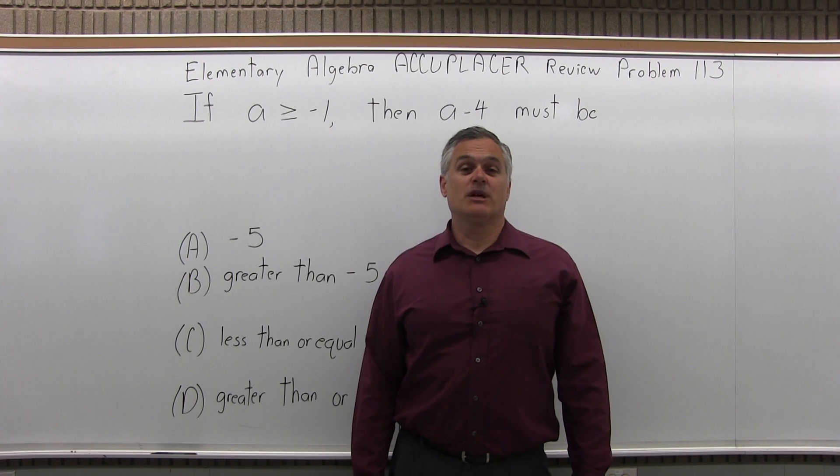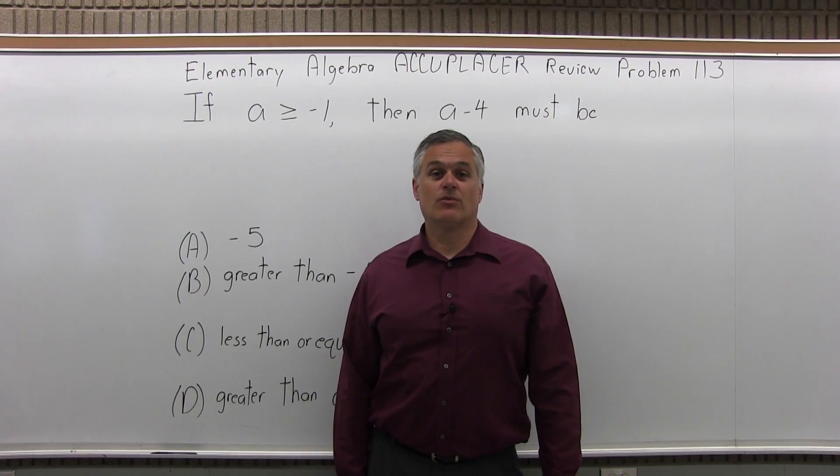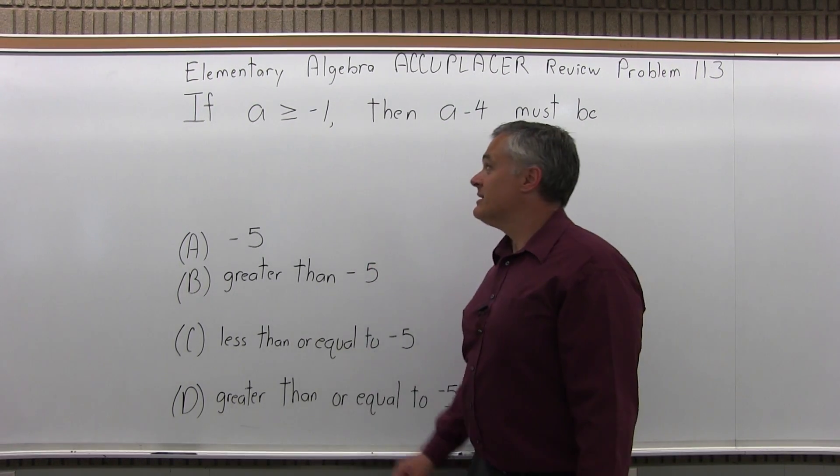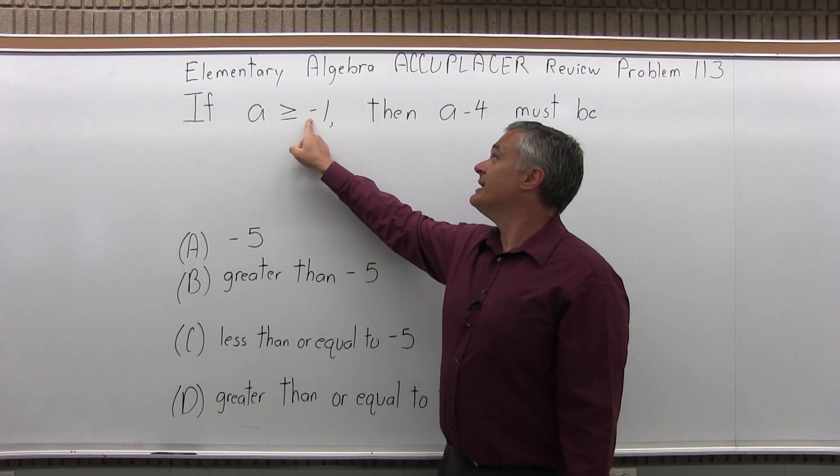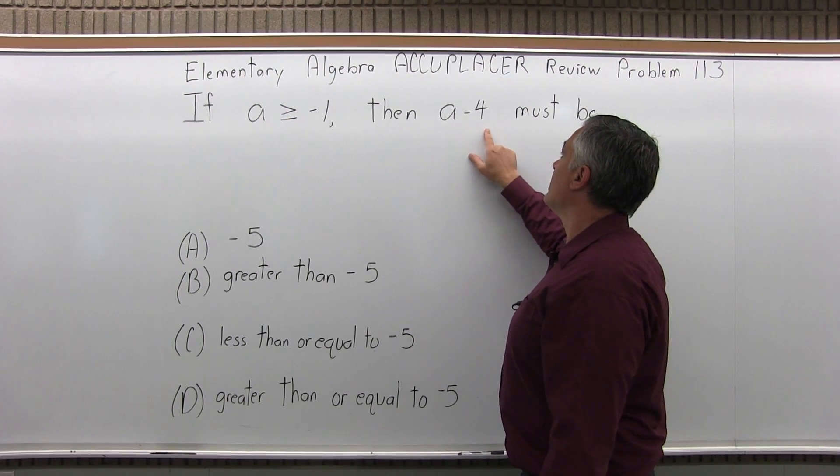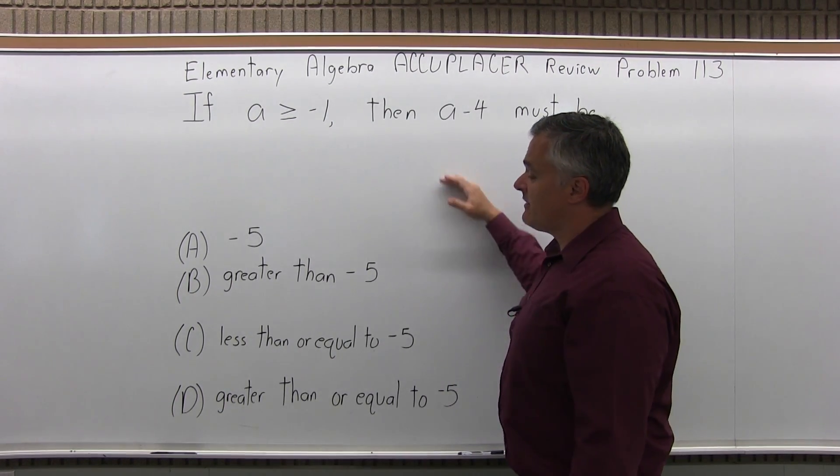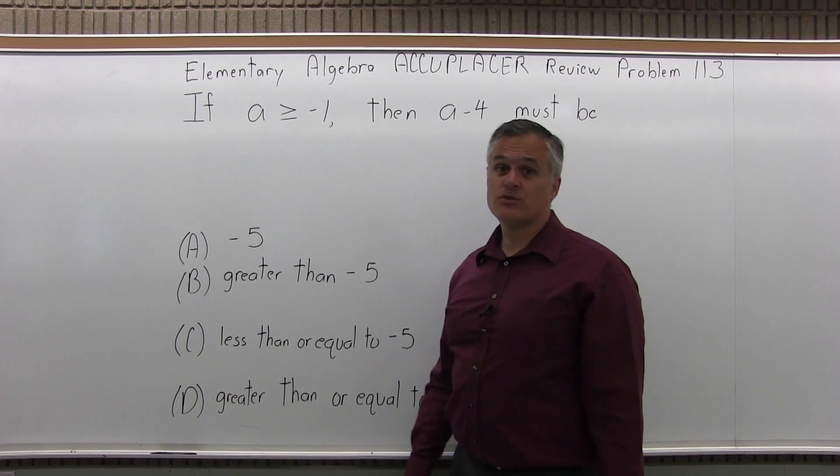This is the Elementary Algebra Accuplacer Review, Problem 113. It says if A is greater than or equal to negative 1, then A minus 4 must be, and we have four options to choose from.